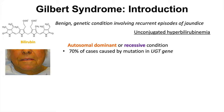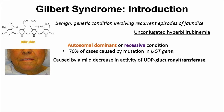70% of cases are caused by a mutation in the UGT gene, and a mutation in UGT1A1 is autosomal dominant. The reason there are recurrent episodes of jaundice is due to a decreased — oftentimes mild — decrease in the activity of UDP-glucuronosyltransferase. That's where we see this UGT: UDP-glucuronosyltransferase. This is the enzyme that is affected.